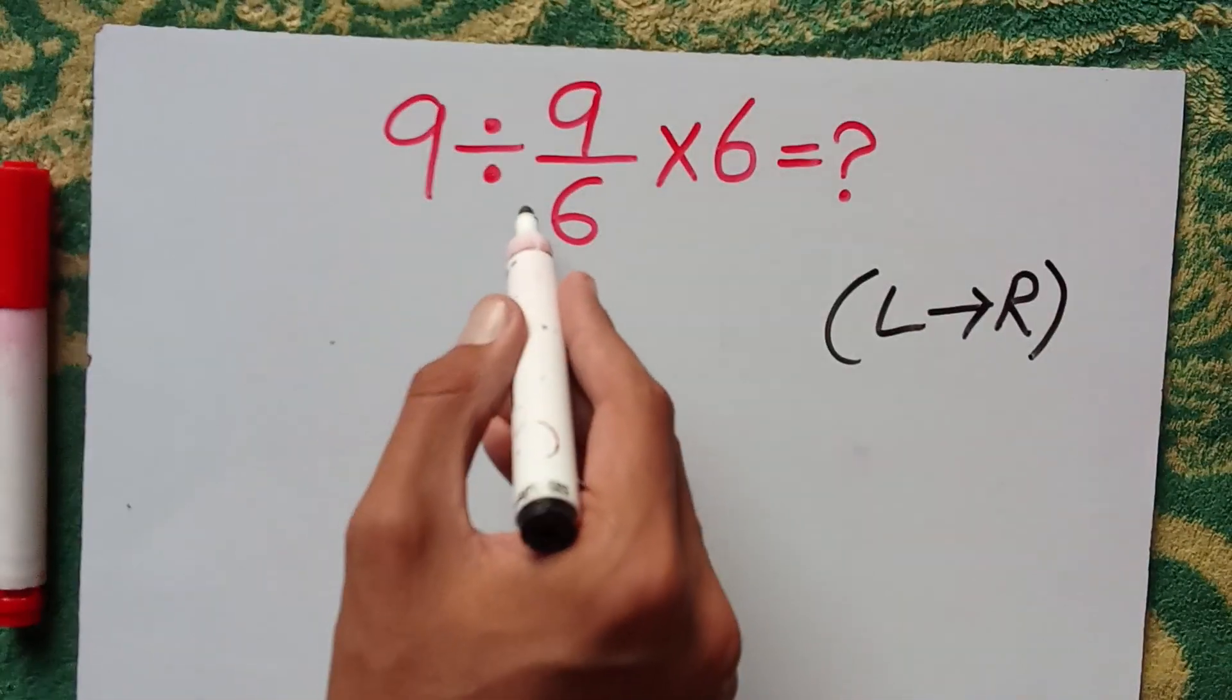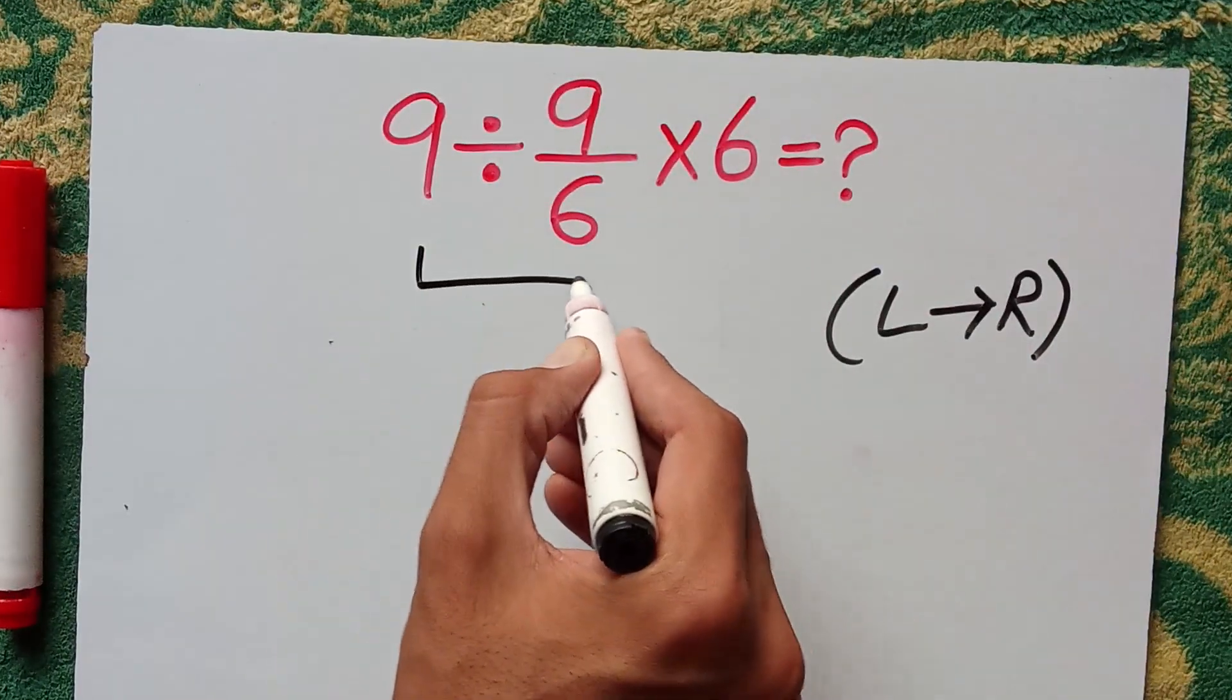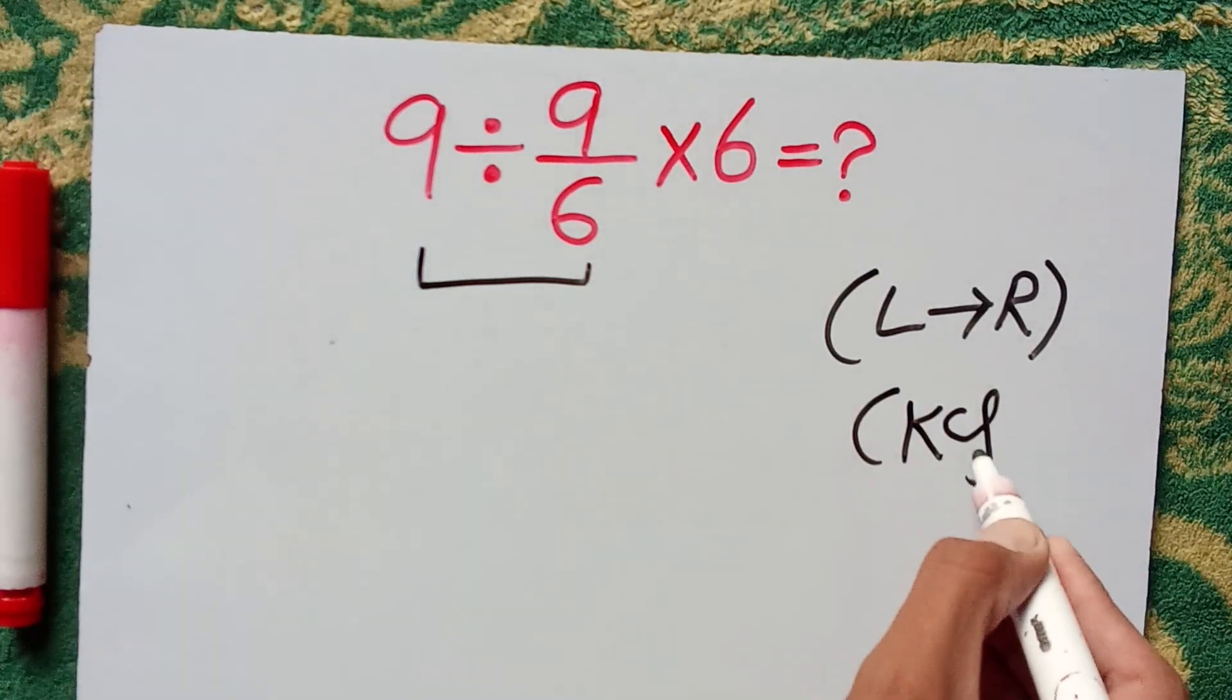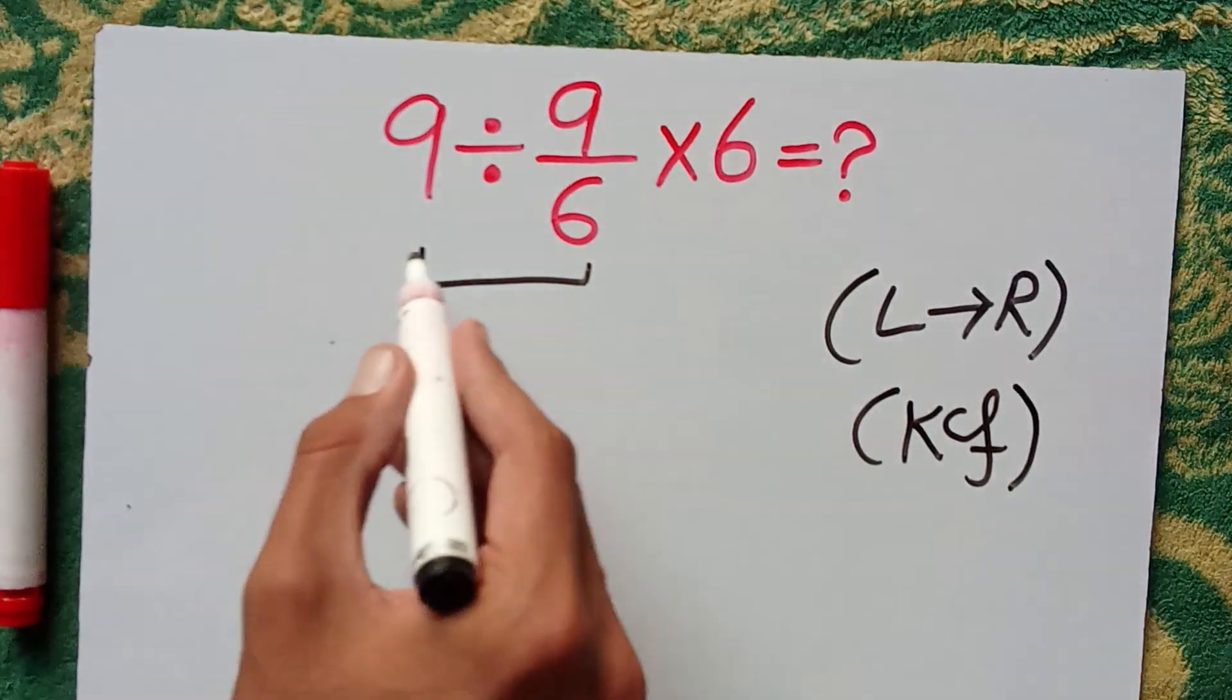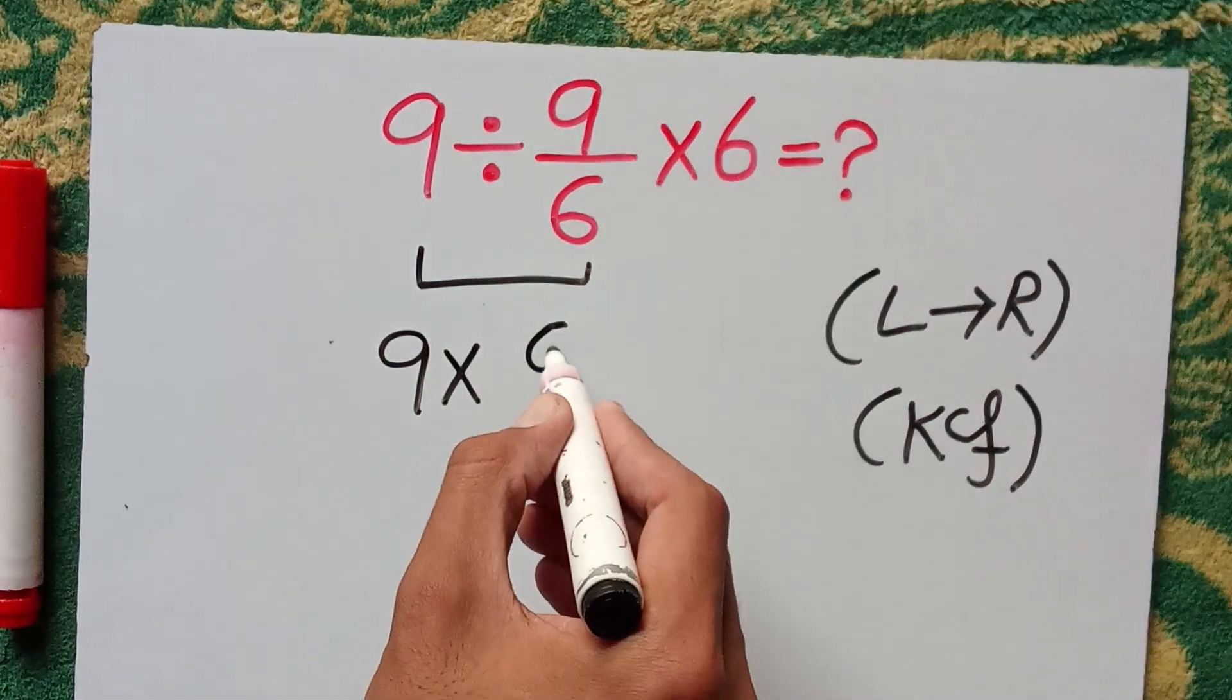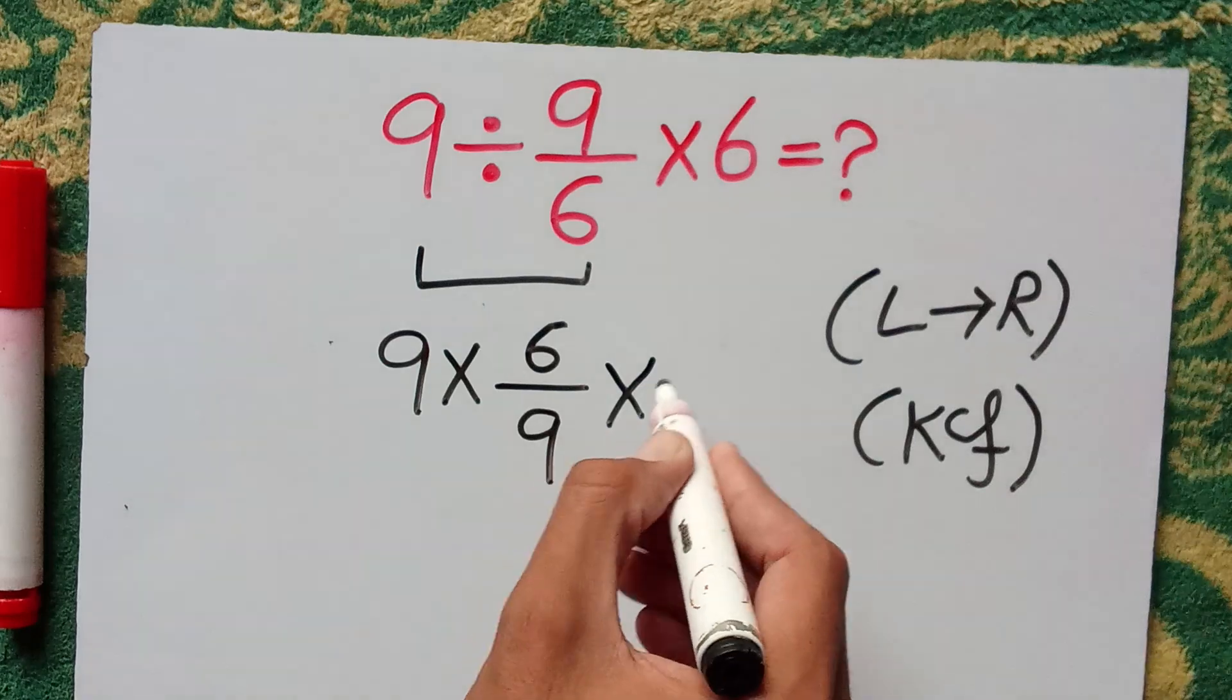So, 9 divided by 9 divided by 6. According to the rule of keep change flip, which is called KCF, we can write it as 9 times 6 divided by 9 times 6.